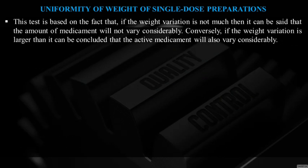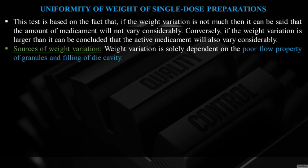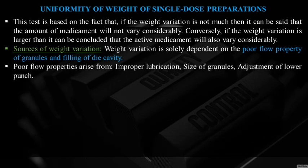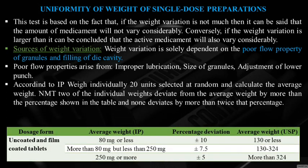Weight Variation Test: The test is based on the principle that if weight variation is small, the amount of medicament will not vary considerably. Sources of weight variation include poor flow property of granules, improper lubrication, size of granules, and adjustment of the lower punch. According to IP: weigh 20 tablets; not more than 2 individual weights may deviate from average by more than the stated percentage, and none may deviate by more than twice that percentage. Table: <80 mg → ±10%; 80–250 mg → ±7.5%; >250 mg → ±5%.